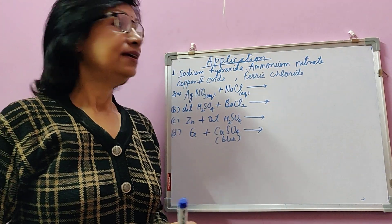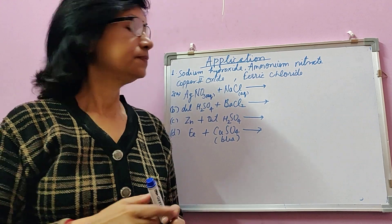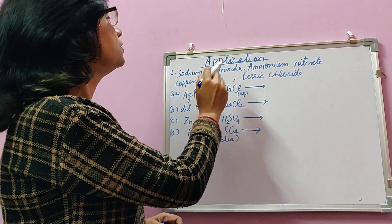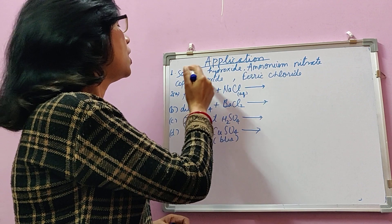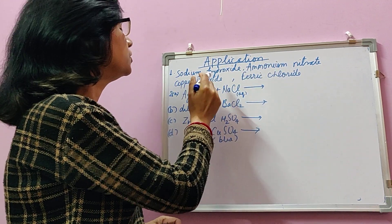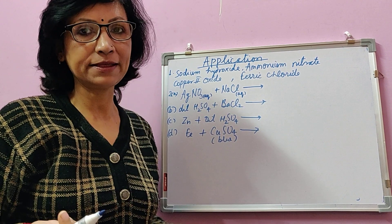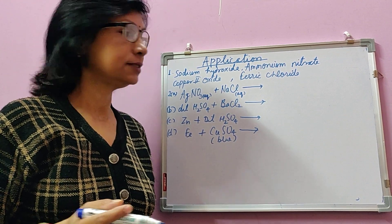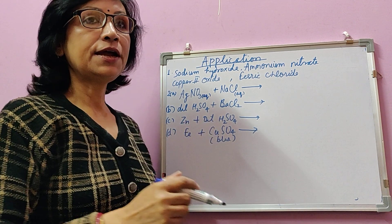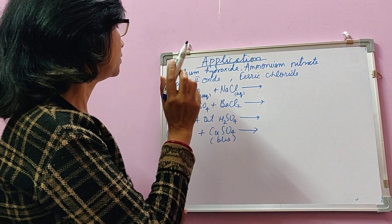Dear students, let's discuss application-based questions. The first question is about framing the formula of sodium hydroxide, ammonium nitrate, copper(II) oxide, and ferric chloride using the criss-cross method — meaning you have to show the process. The second question is to write a balanced chemical equation for the given reactions.